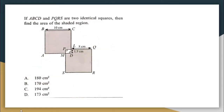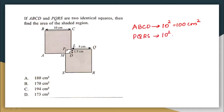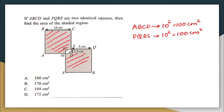If ABCD and PQRS are two identical squares, find the area of the shaded region. First, the area of square ABCD is 10 squared, which equals 100 cm². Similarly, the area of square PQRS is also 10 squared, equal to 100 cm². Now we need to find the area of the two shaded regions. Let's call the first one shaded region 1 — it is the area of square ABCD minus the area of the small rectangle.